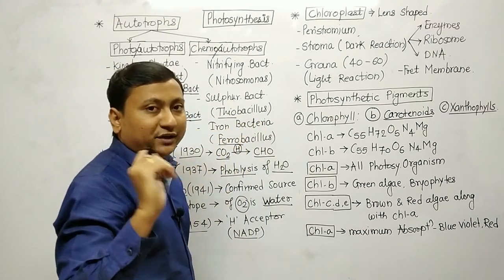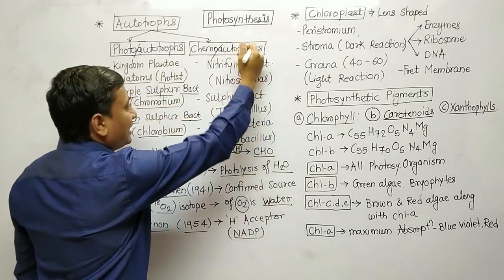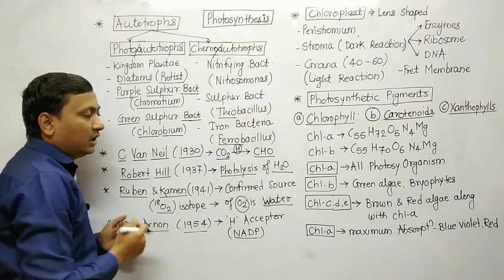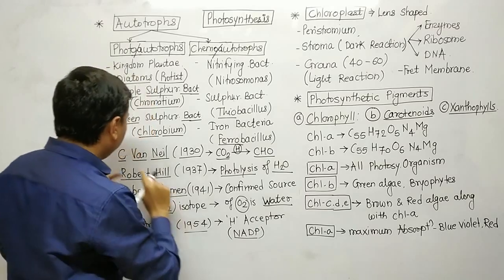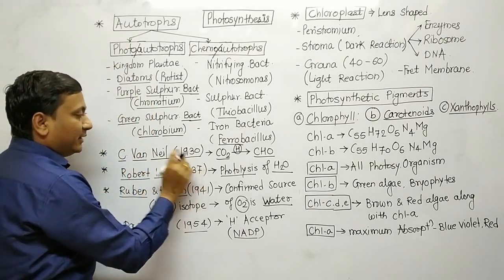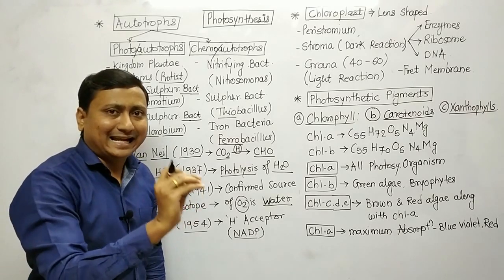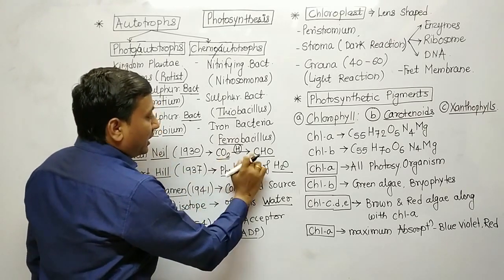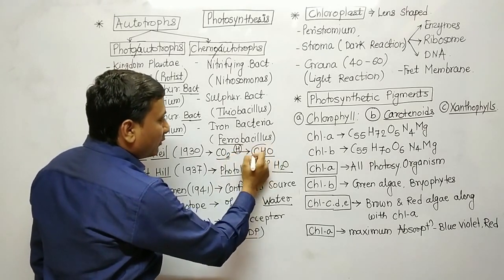These are important. In the early experiments, there were many scientists. The first scientist is C. Van Niel. In 1930, he confirmed that photosynthesis is a light-dependent process in which reduction of CO2 occurs with the help of hydrogen to form carbohydrates.